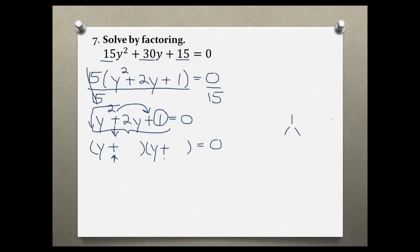If I have the same signs, the factors must add. If I have different signs, they subtract. But in this case they are the same, so I must add to get the middle number, which is 2. Which factors of 1 would add to give me 2? That's 1 plus 1, because 1 times 1 is 1.